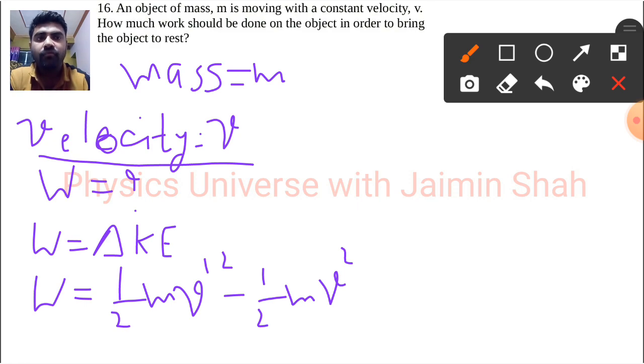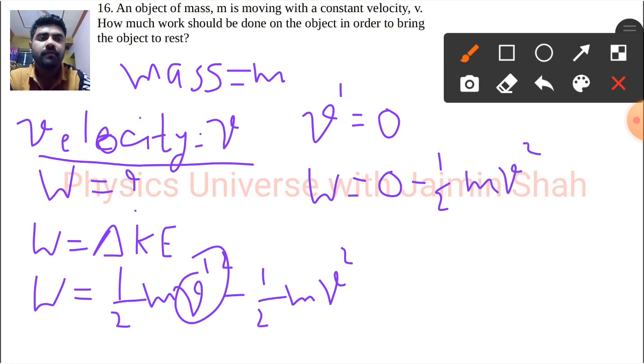Now what we have to do? We have to apply force, work on that object so that the object will come to rest. So v dash, our final velocity, has to be zero. Just put in this equation. So W equals, first term cancels out, 0 minus half m v square. We are left with W equals minus half m v square.